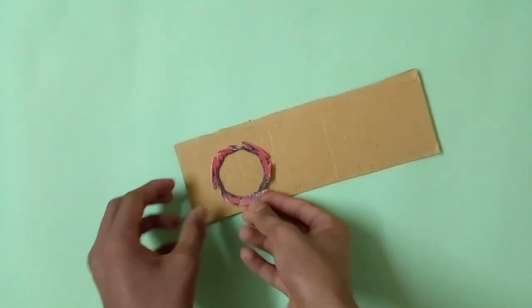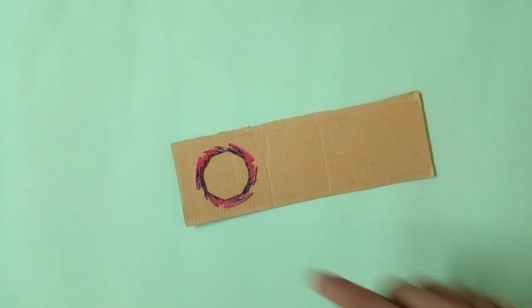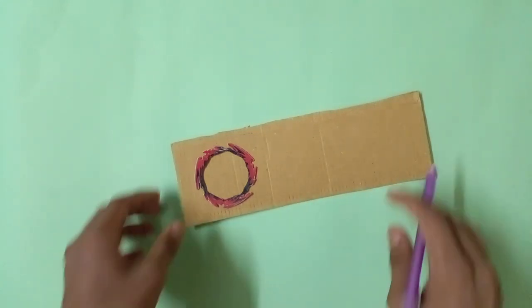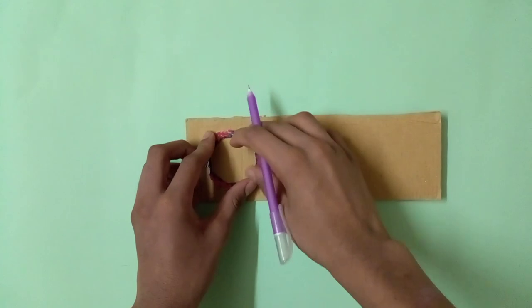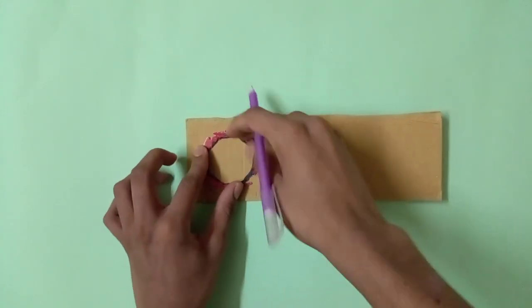Now place this template on the cardboard piece like this and now draw around it with pencil. Now just accompany me what I do. Now watch carefully.